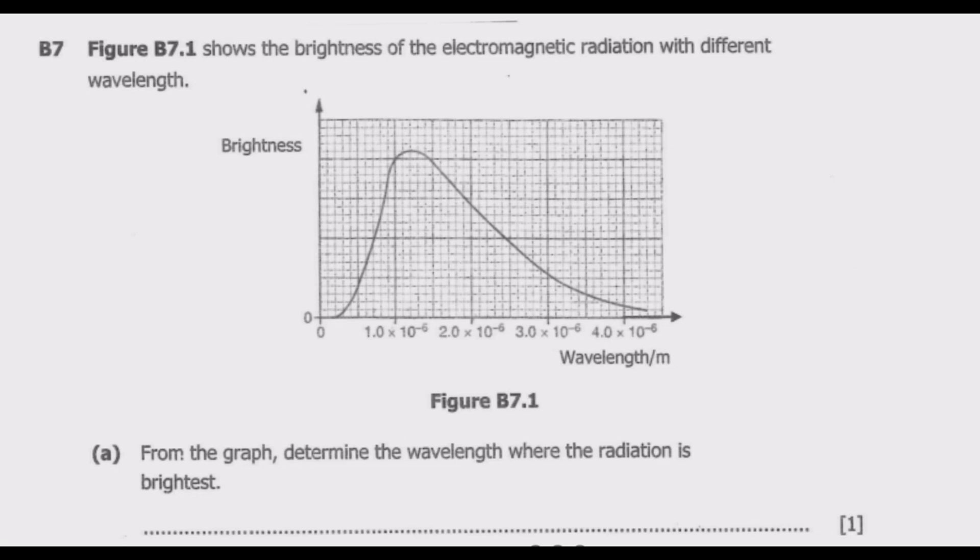Let us look at question B7. Figure B7.1 shows the brightness of the electromagnetic radiation with different wavelength. We have brightness on the vertical axis, then wavelength on the x-axis.